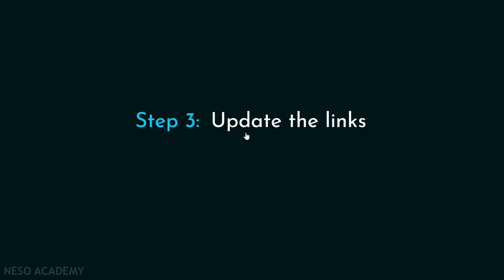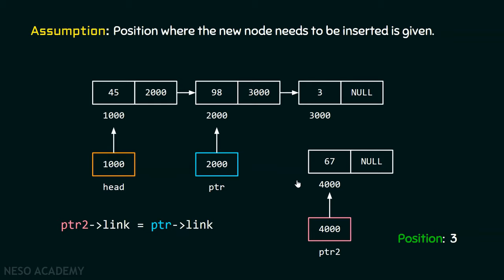After this, step three is to update the links. We will update the links — first, we will update the link part of this node by using this line of code: ptr2->link = ptr->link. We want to store this particular address in the link part of this node, because we want this node to point to that particular node. So ptr2->link must contain ptr->link, that is this particular address.